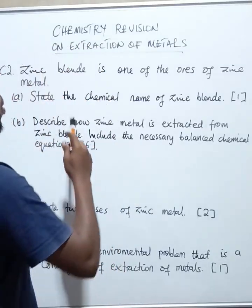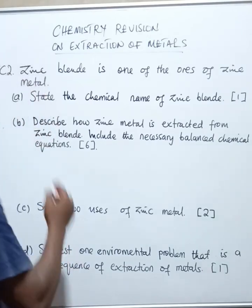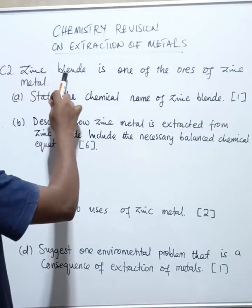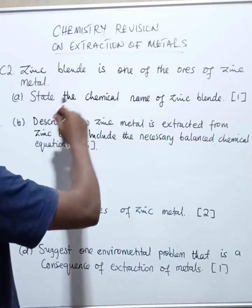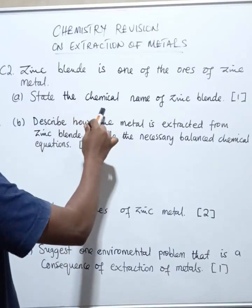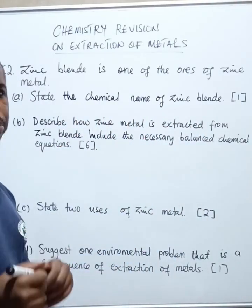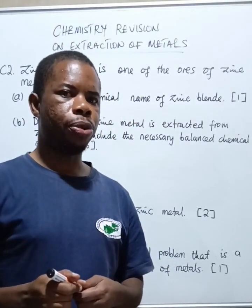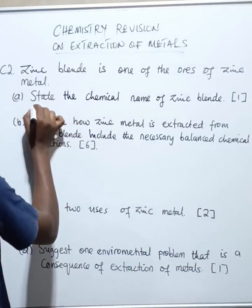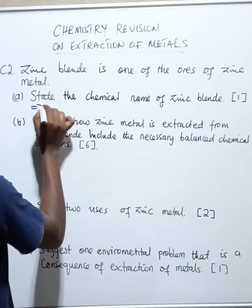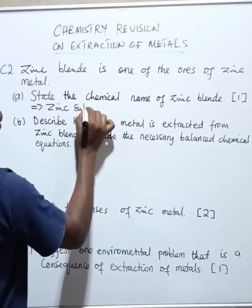The question is a revision on extraction of metals and it reads: Zinc blende is one of the ores of zinc metal. Part A states: what is the chemical name of zinc blende? The chemical name of zinc blende is zinc sulfide. So the answer here is zinc sulfide.